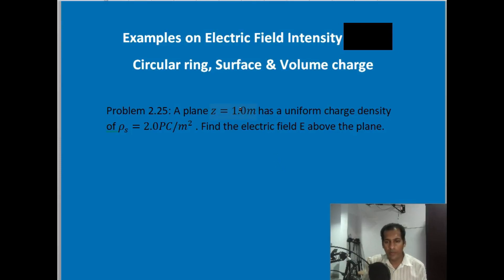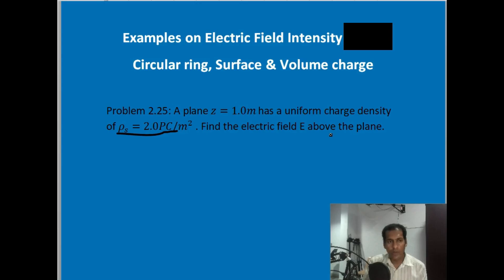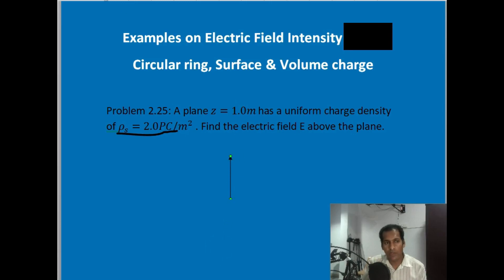Let us begin with our first example. A plane z equal to 1 meter has a uniform charge density of rho s equal to 2 picocoulombs per meter square. We have to find out the electric field intensity above the plane. To imagine this setup, let us first consider what a plane is — it is like a plane paper, or considering our classroom, a plane can be a wall, side wall, top wall, or the floor.